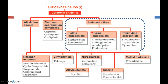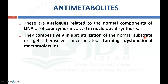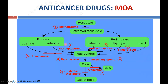The next class of cytotoxic drugs is antimetabolites, which include folate antagonists, purine antagonists, and pyrimidine antagonists. As the name indicates, these are analogues structurally similar to normal components of DNA or coenzymes involved in nucleic acid synthesis — such as purine and pyrimidine nitrogen bases. They competitively inhibit the utilization of normal substances and get incorporated, forming dysfunctional macromolecules. They act at the step of conversion of nitrogen bases to nucleosides.